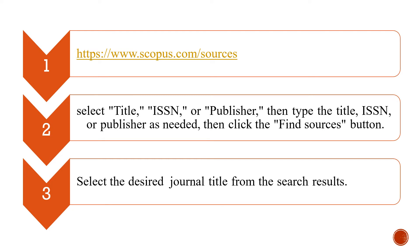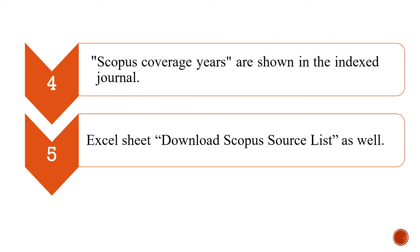Once we click on this, select the desired journal title from the search results. There will be many journals that will appear, and for the journal we are looking for, we need to click on it. After clicking, we can see the Scopus coverage years of that particular journal. And even from Scopus, we can download in the form of an Excel sheet by clicking on the Download Scopus Source List option as well.